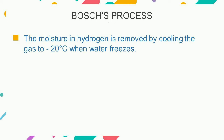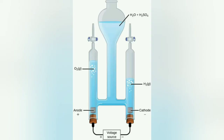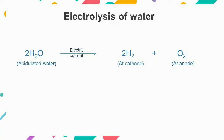Pure hydrogen thus obtained is collected in steel cylinders. Hydrogen is also obtained commercially by the electrolysis of acidulated water. When electricity is passed through acidulated water, oxygen is obtained at the anode and hydrogen is obtained at the cathode. Hydrogen and oxygen obtained by this method are pure.